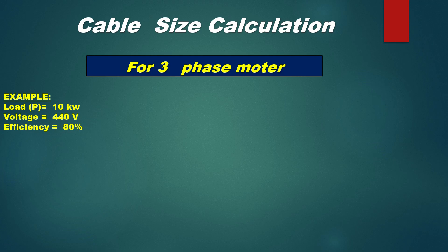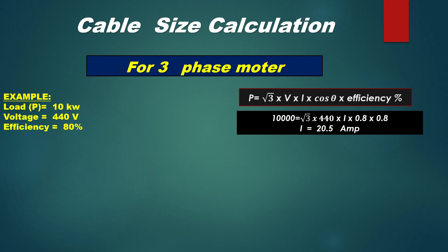Load P is equal to 10 kilowatt, voltage is equal to 440 volt, efficiency is equal to 80%. Now put the values in this formula. P is equal to under root 3 multiplied by voltage multiplied by current multiplied by cos phi multiplied by efficiency. Now put the values: 10,000 is equal to under root 3 multiplied by 440 multiplied by current multiplied by 0.8 multiplied by 0.8, so the answer is current is equal to 20.5 ampere.